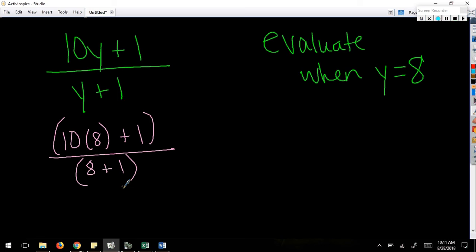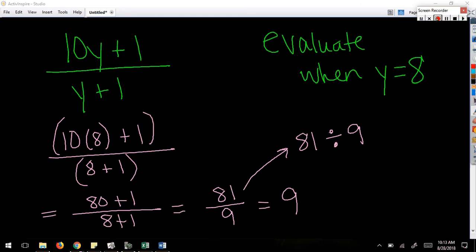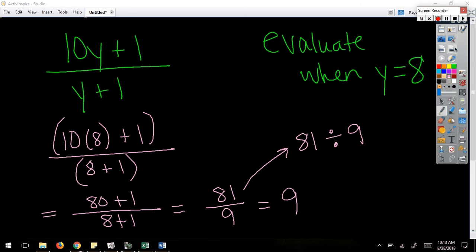What do you do first? 10 times 8. So I've got 80 plus 1 over 8 plus 1. What can I do now? Add them. I can't have a room here, someone come to the side. 81 divided by 9. And now I can divide and get 9.